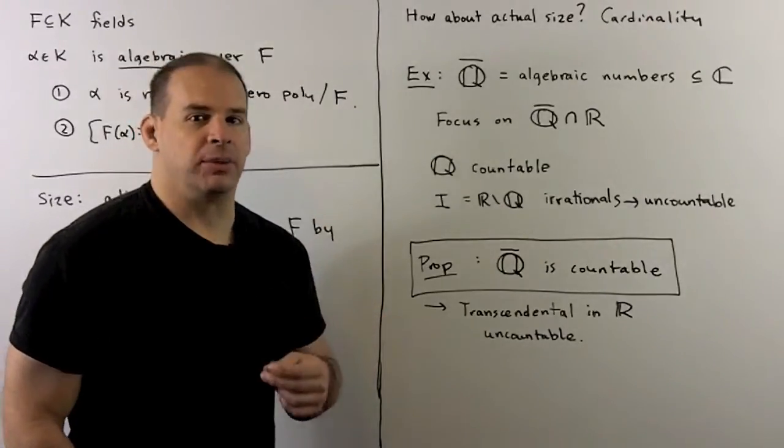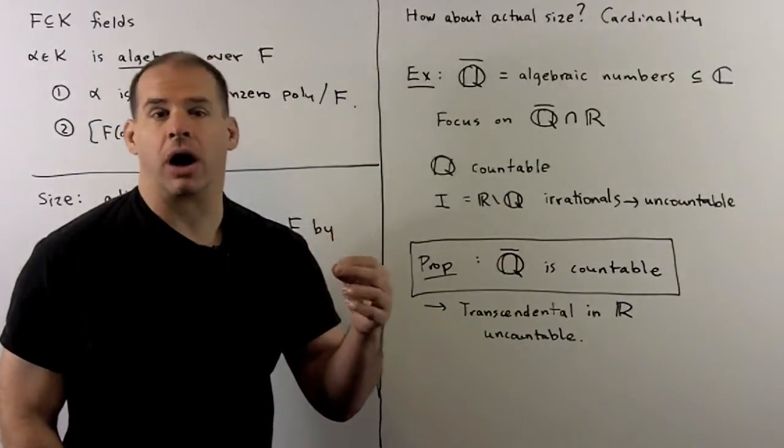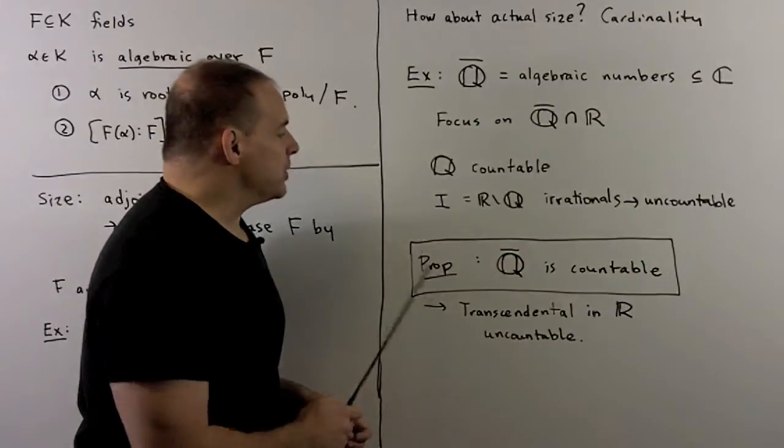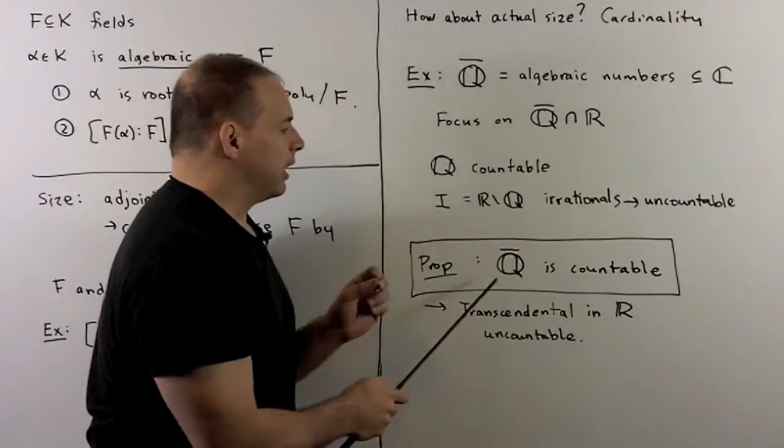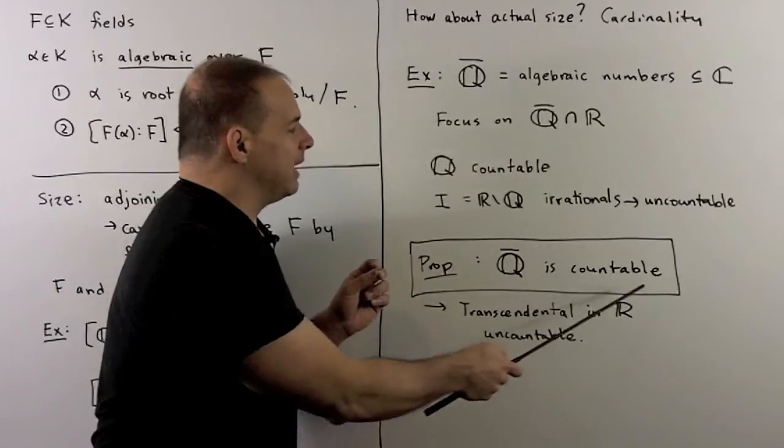With our first approximation, we see not very far. So, proposition, if we take the algebraic numbers in the reals, that set is going to be countable.